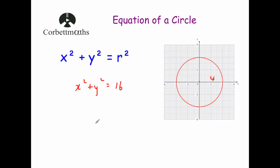Sometimes in a test paper they might not write x² + y² = 16; they might write it as x² + y² = 4², actually writing the radius with the squared symbol. Obviously 4² is 16, so these two equations are identical. Just note that you might see the equation of a circle in this format. I like to square the radius and write it as a number — it's just a habit.